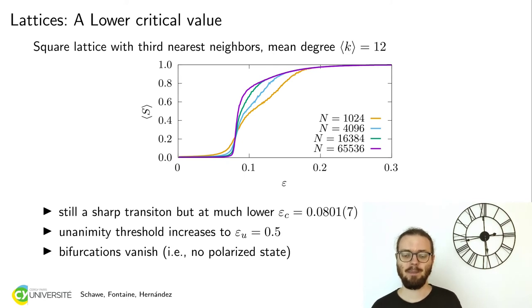It looks different. You see that there is no bifurcation pattern anymore. You can also see that the point where it changes from fragmentation to consensus is not at 0.2 anymore, but at 0.08. So the threshold to consensus is far lower. It's far easier to obtain consensus in a lattice than in a full population. That is exactly the opposite of the unanimity, which was far harder to obtain.